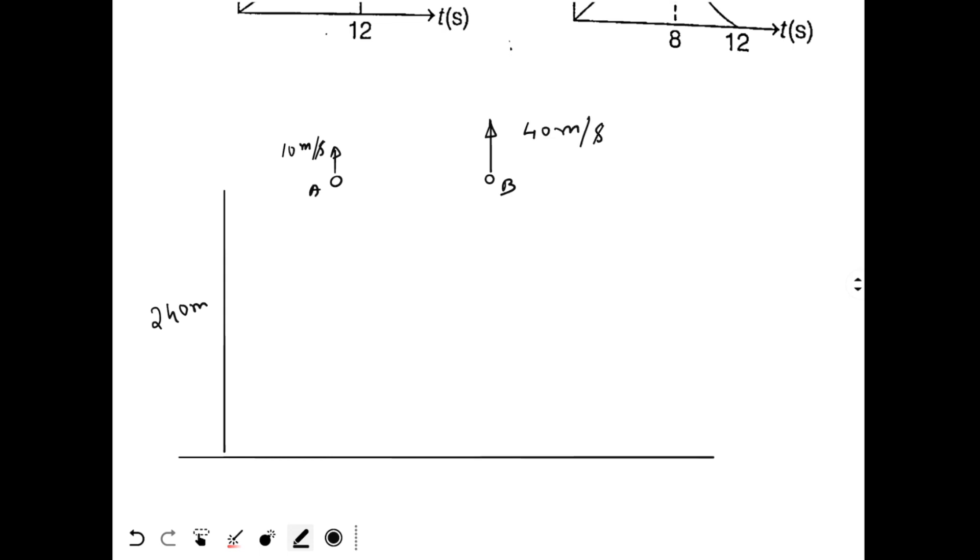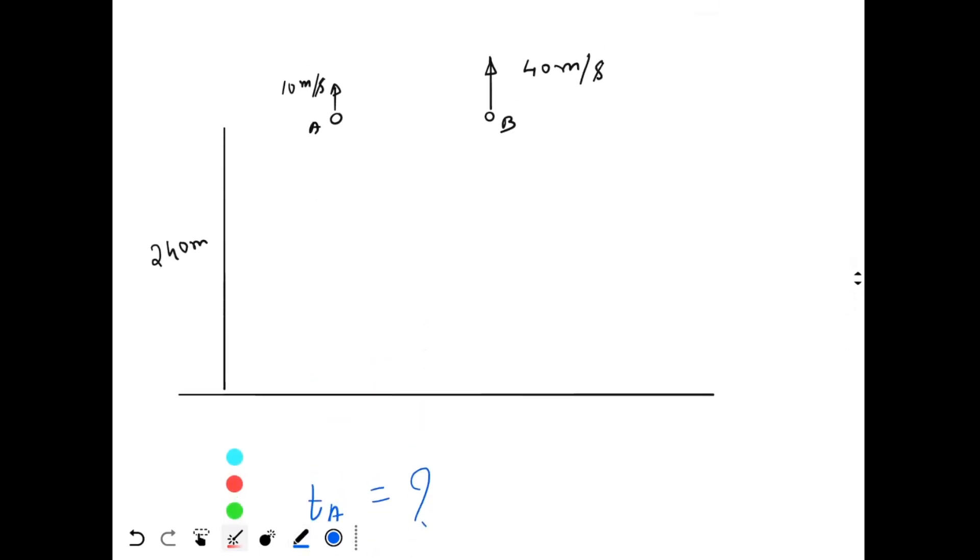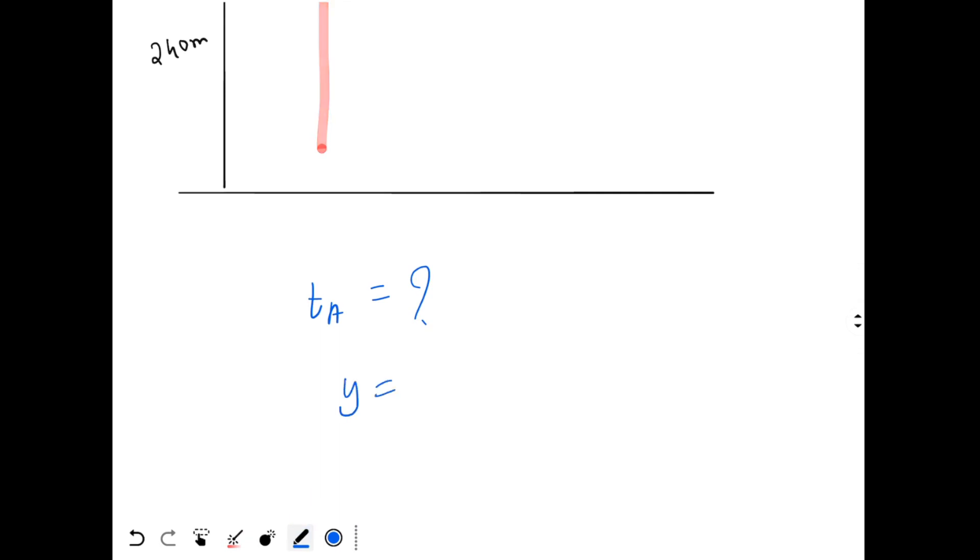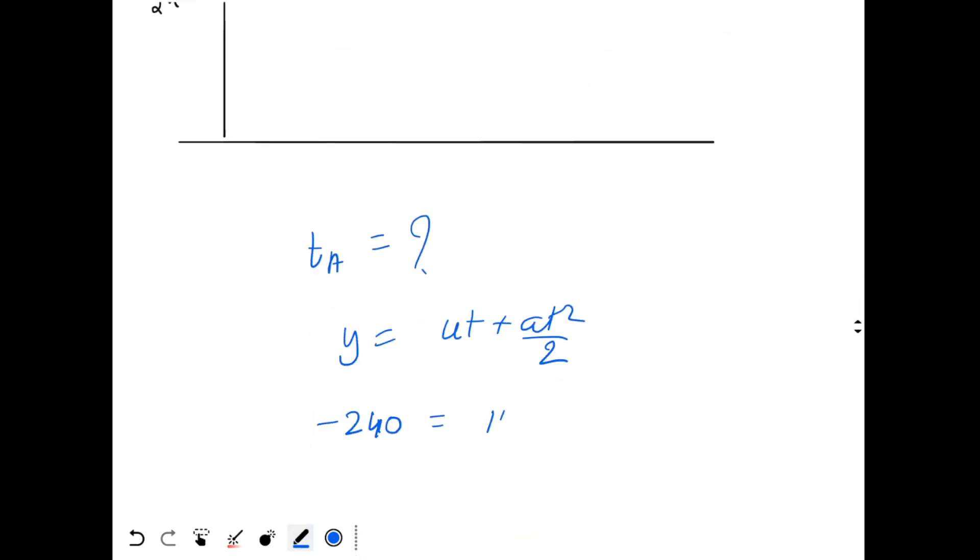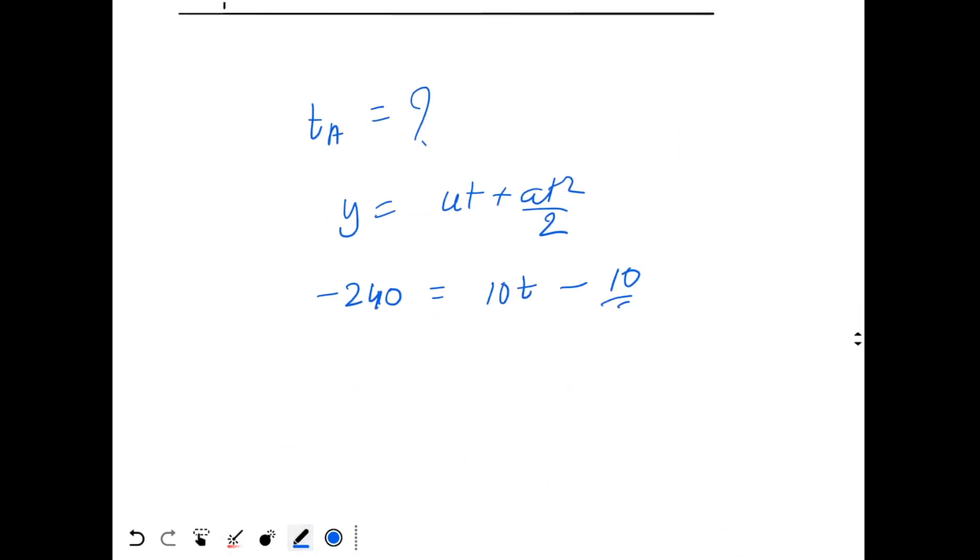Now let's go to the first part. What is the time taken by the stone A to reach the ground? Time for stone A to reach the ground will be found using the displacement formula. So displacement of stone A will be 240 meter downwards. I could write this equation Y equal to UT plus at² by 2. So Y will be minus 240, U is 10, and g is to be taken as 10 meter per second square. So minus 10 by 2 T square.